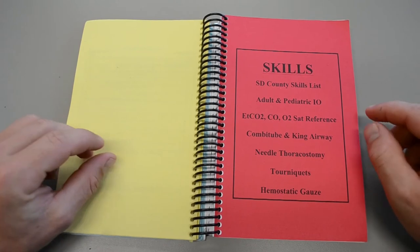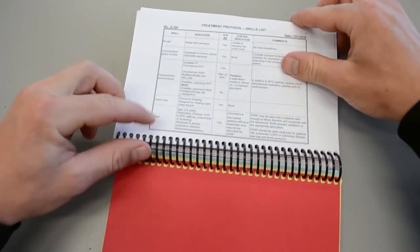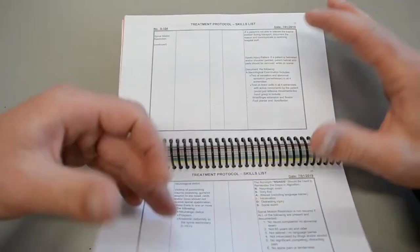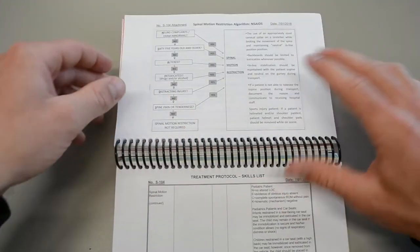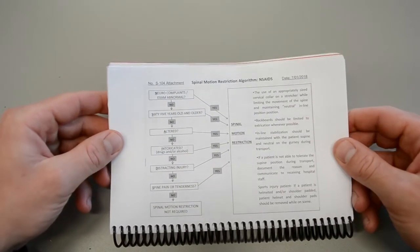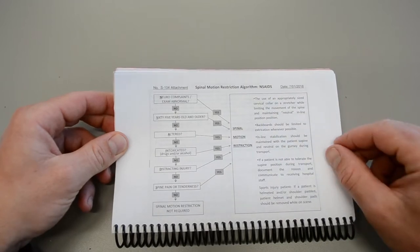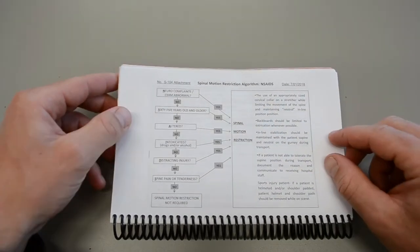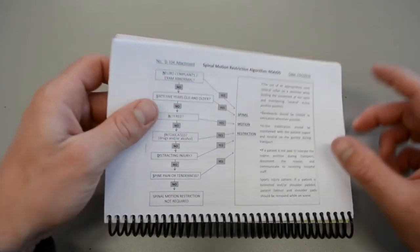The next section is skills. So the orientation kind of flips here. There are some BLS skills, particularly this flow chart that we need to be familiar with. So this is your spinal motion restriction algorithm. We'll talk all about this when we get to your trauma section.